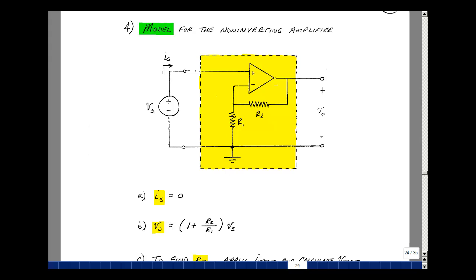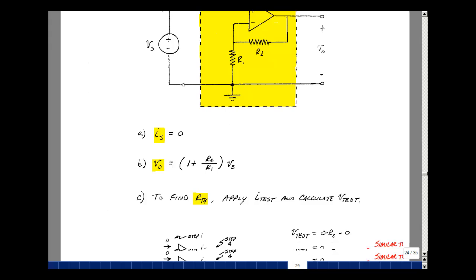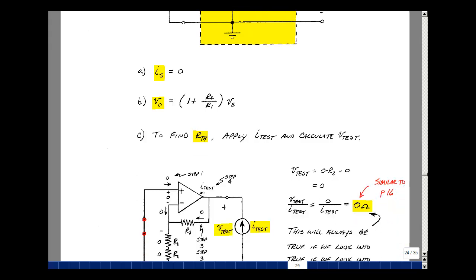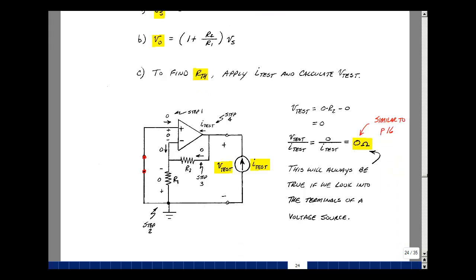The last thing I don't really know about is what's going to happen when I put a load here. In other words, what's the Thevenin resistance looking back into this circuit? Well, let's find it. Set all the independent sources equal to zero. In this case, shorting this. We could apply a test current and measure the voltage across here.